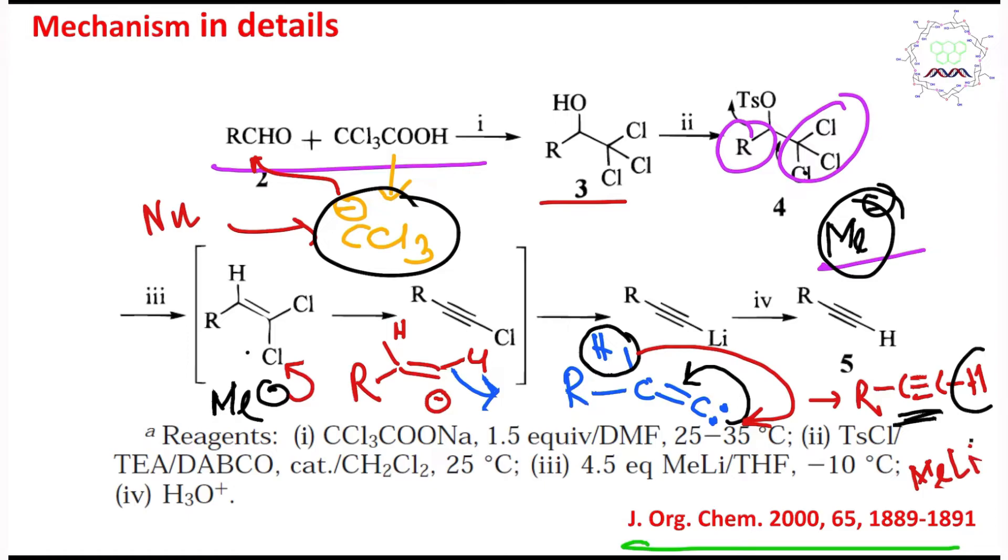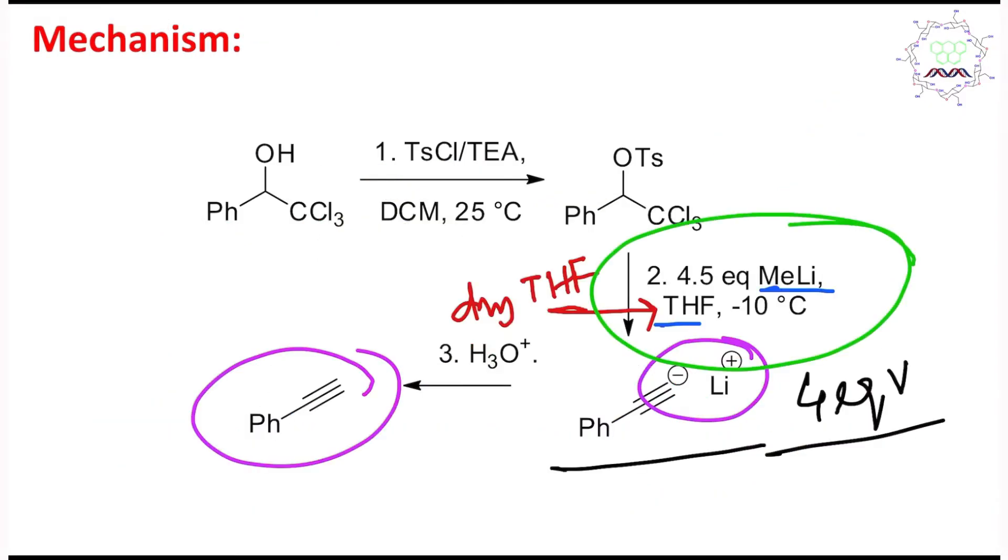These methyl lithium is a very strong base, and alkyne carbon-hydrogen or sp carbon-hydrogen bond is significantly acidic. Theoretically, you can see actually one, two, and three molecules of these proton abstraction happen, means three molecules of this methyl lithium is consumed. Letters are extra for precautions. At the last step, this is workup such that this terminal alkyne lithium salt is converted to terminal alkyne.